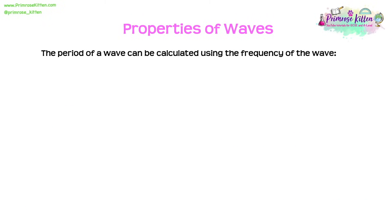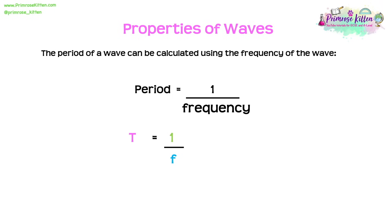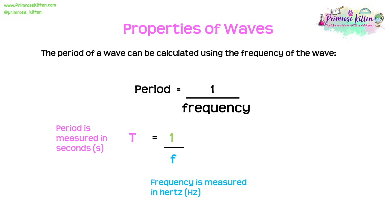The period of a wave can be calculated using: period equals one over frequency, or T = 1/f. The period is measured in seconds and frequency in hertz. If we need to find frequency given the time period, we simply rearrange to get f = 1/T.